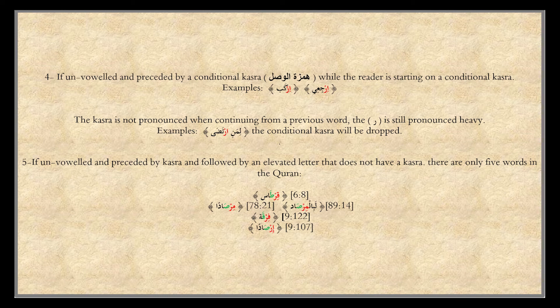Number five: if unvoweled and preceded by Kasra, and followed by an elevated letter that does not have a Kasra. This applies to only five words in the Quran: Qirtas, Mir-Rasad, Labil-Mir-Rasad, Firqah, Ir-Sada. These are the only five words to which this rule applies.